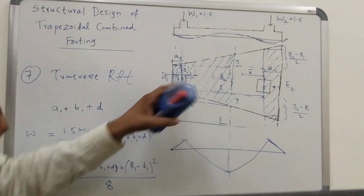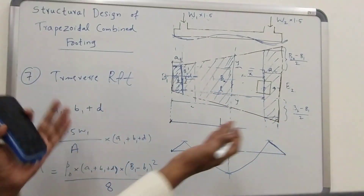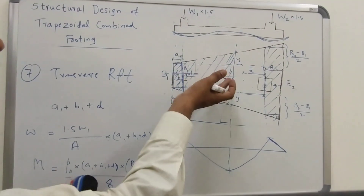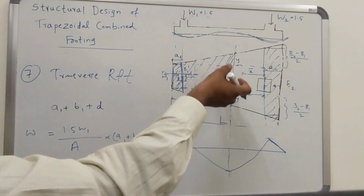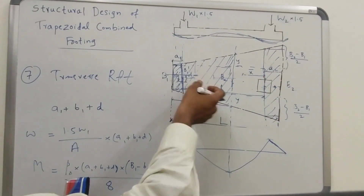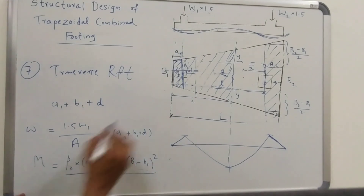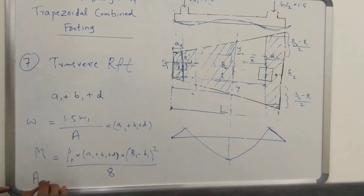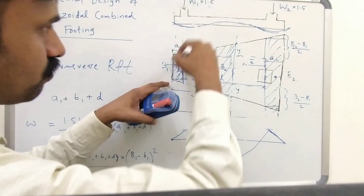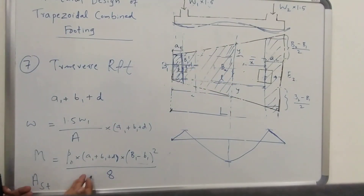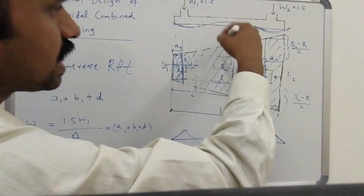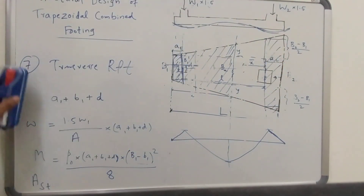You need not recalculate the depth, because the depth calculated for the longitudinal direction is the critical one; the transverse reinforcement layer sits above that. The effective depth for the transverse direction equals the depth from the longitudinal moment minus half the bar diameter. Based on this depth, calculate the AST required in the transverse direction along this bandwidth using IS 456 page 96. Similarly, do the analysis for the column 2 bandwidth as well, and provide minimum transverse reinforcement in the center.